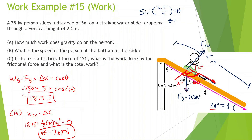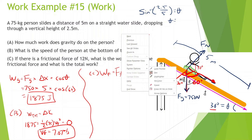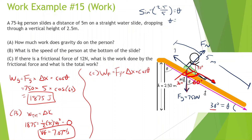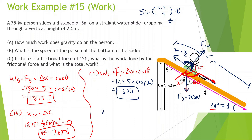If the frictional force is 12 newtons, what is the work done by friction and what is the total work? Work done by friction equals force of friction times displacement times cosine of theta. Friction acts in the opposite direction — up the slope — while displacement is down the slope, so the angle is 180 degrees. So 12 times 5 times cosine of 180 gives us negative 60 joules. That makes sense because friction slows down the motion. Total work is 1,875 minus 60, so work total equals 1,815 joules.